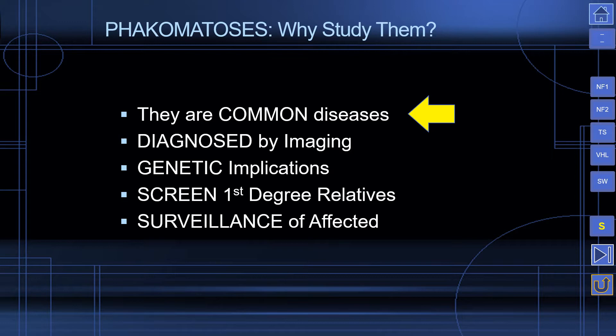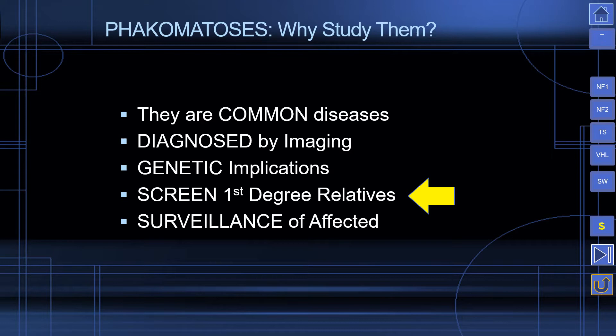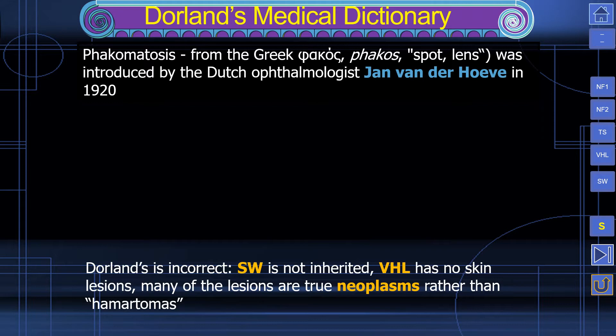Why should we study phacomatoses? They're common diseases, they're diagnosed by imaging, and there are important genetic implications. In fact, all the diseases we're talking about today are autosomal dominant, with the exception of Sturge-Weber disease. If we identify an affected individual, we should screen all their first-degree relatives. And we have to have a prospective plan for surveillance of the affected individuals.